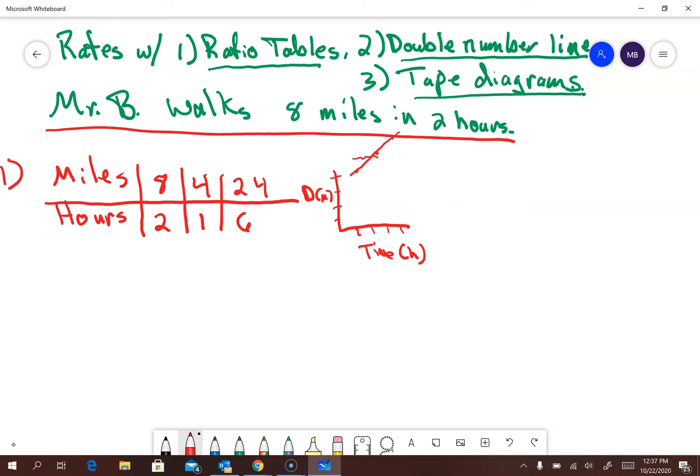Similarly, in a double number line, it's very close. In fact, let me just make it underneath here. Let me change colors because, well, because I can. I have two number lines like that and they go on forever because they're number lines. And I'm going to label them the same. I'm just going to label them miles as the first one.